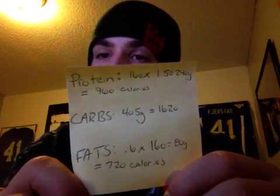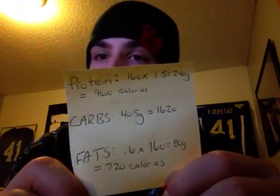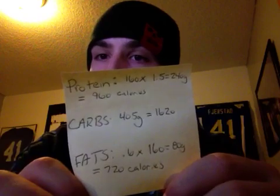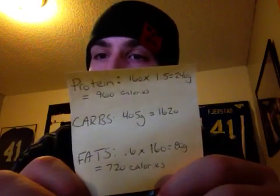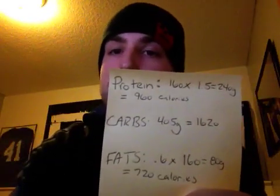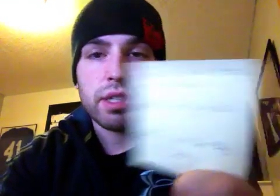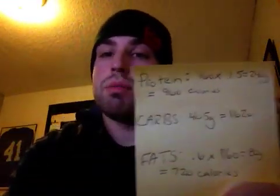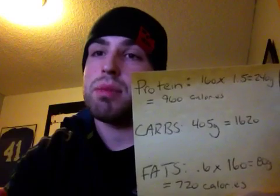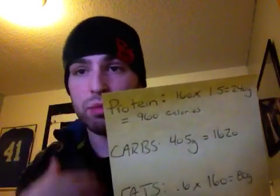So from there, what you would do is add the fats and the proteins together. It's going to give you a number, and you basically fill in the rest with carbs. So I have him eating 405 grams of carbs, which equals 1620. So that's his macros right there, if it fits your macros, basically, type of deal there.